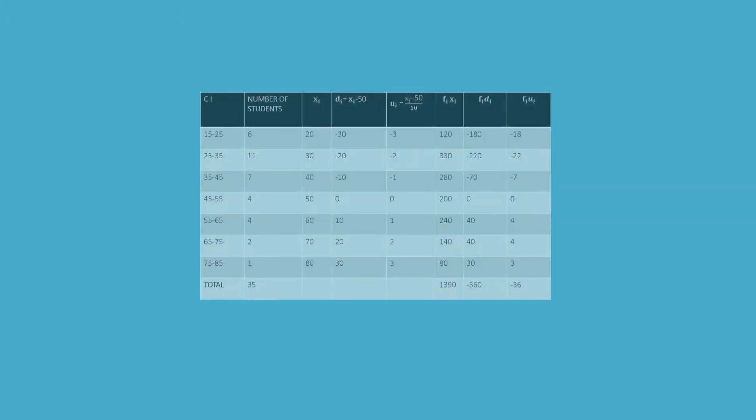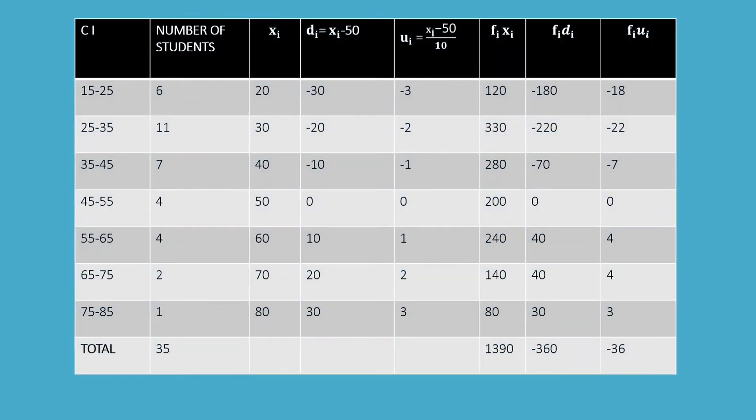We'll get the table in this form having class intervals, number of students with total as 35, x_i values, d_i equal to x_i minus 50 values, u_i equal to x_i minus 50 by 10 values, and f_i x_i values.